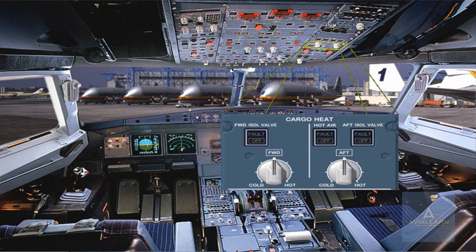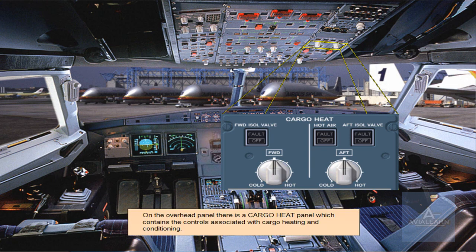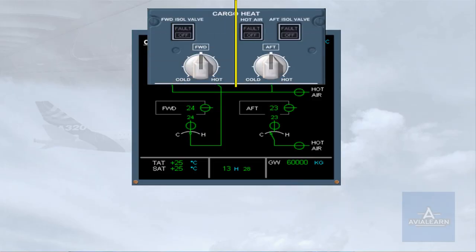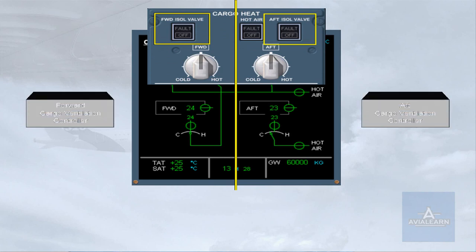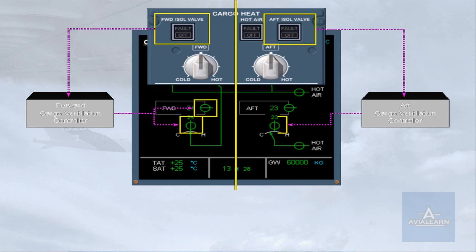On the overhead panel, there is a cargo heat panel which contains the controls associated with cargo heating and conditioning. For each cargo compartment there is an isolation valve push-button switch. These push-button switches normally remain in their lights-out auto position. In this case, the cargo ventilation controller will automatically open and close the isolation valves.